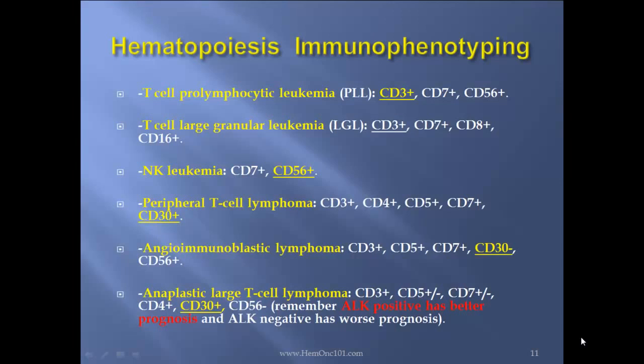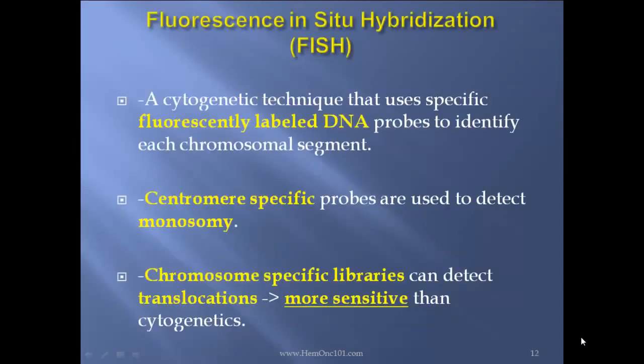Brentuximab has just been approved for this indication. Remember, ALK positive anaplastic large cell lymphoma has a better prognosis than ALK negative, with translocation 2;5. Fluorescence in situ hybridization — FISH — is a cytogenetic technique that uses specific fluorescently-labeled DNA probes to identify each chromosomal segment. Centromere-specific probes are used to detect monosomy. Chromosome-specific libraries can detect translocations — more sensitive than standard cytogenetics.